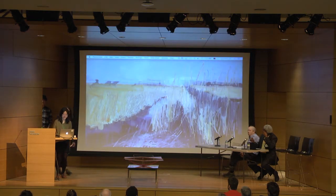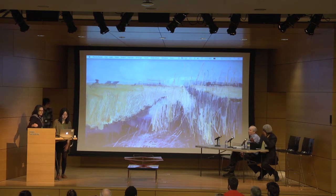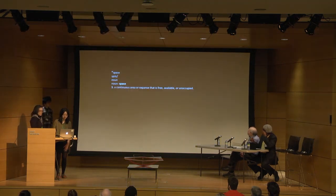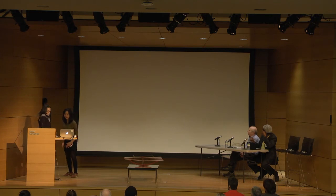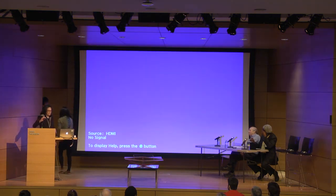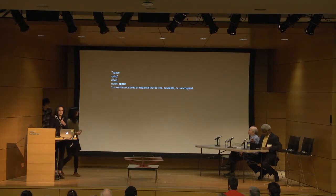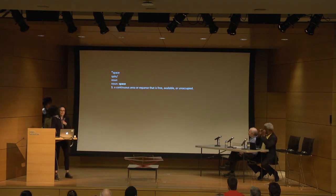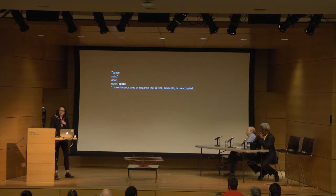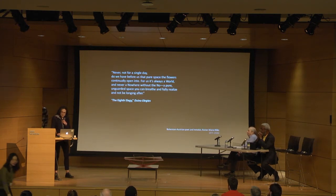And the first definition is the basis of my talk. This is what I found: a continuous area or expanse that is free, available, or unoccupied. That word 'unoccupied' means a lot to me because architects are thinking about how we occupy space, how we dwell, how we inhabit. I thought it was pretty interesting that it's free, available, or unoccupied.